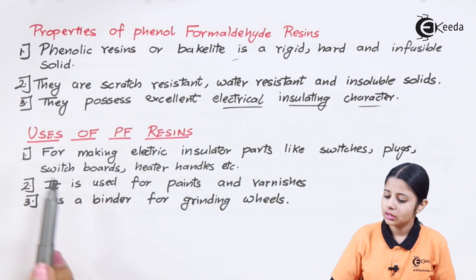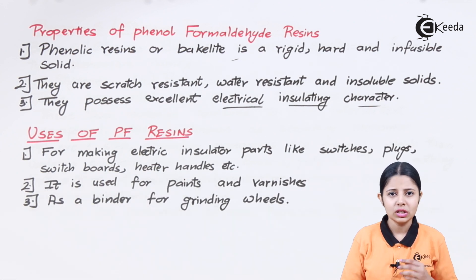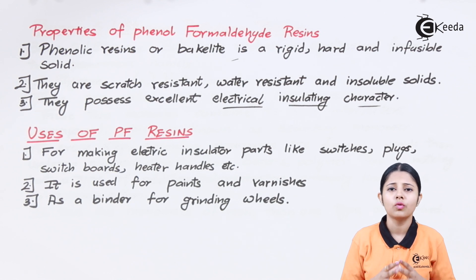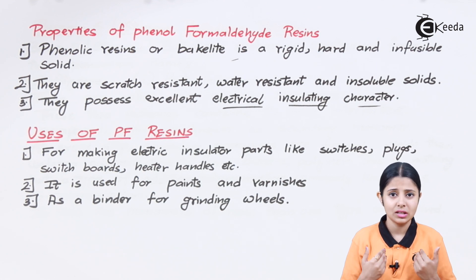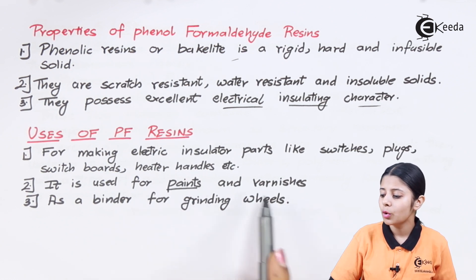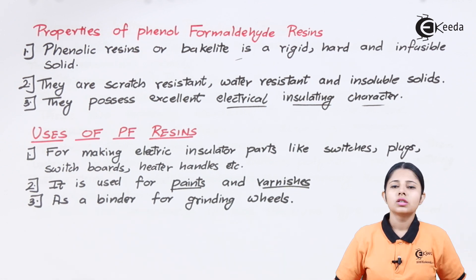The uses of phenol formaldehyde resin include: first, making electric insulating parts such as switches, plugs, switchboards, and heater handles — a switch made of Bakelite will not disintegrate for years and insulates against electrical shocks. Second, it is used as a component in paints and varnishes. Third, it is used as a grinder for grinding wheels.